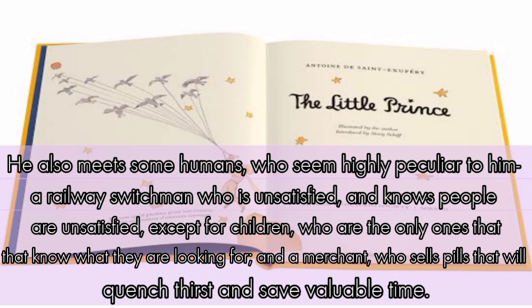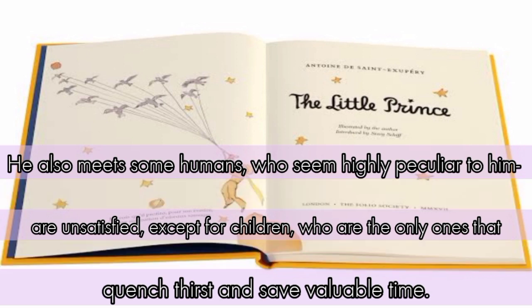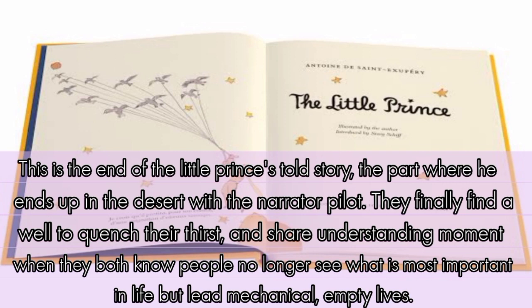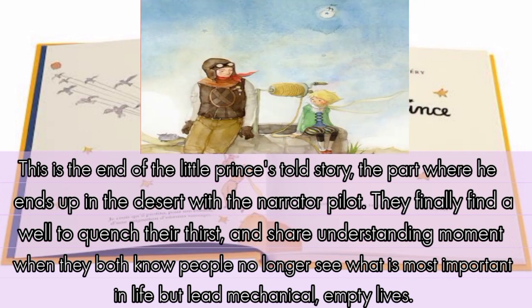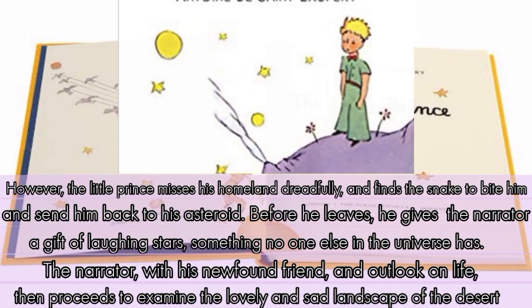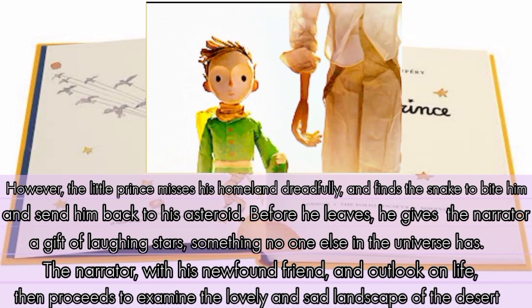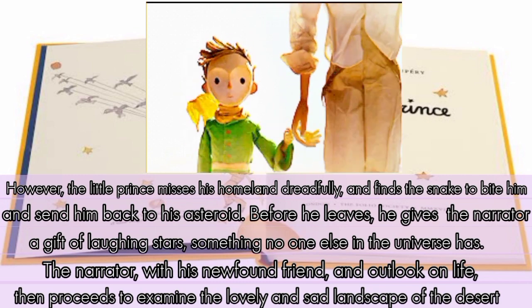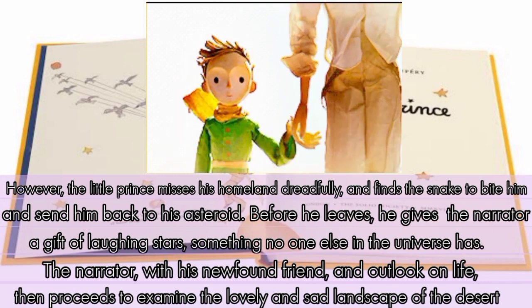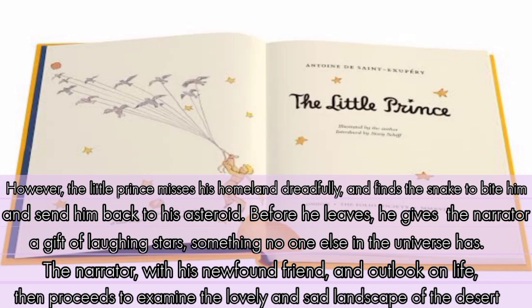And there is a merchant who sells pills that quench thirst and save time. This is the end of the little prince's told story — the part where he ends up in the desert with the narrator-pilot. They finally find a well to quench their thirst, and share an understanding moment when they both realize that people no longer see what is important in life but live mechanical, empty lives. The little prince misses his homeland and finds the snake to bite him and send him back to his asteroid. Before he leaves, he gives the narrator a gift of the loving stars — something no one else in the universe has. The narrator then examines the lovely and sad desert landscape, and the lone star of the little prince shining in the night sky.